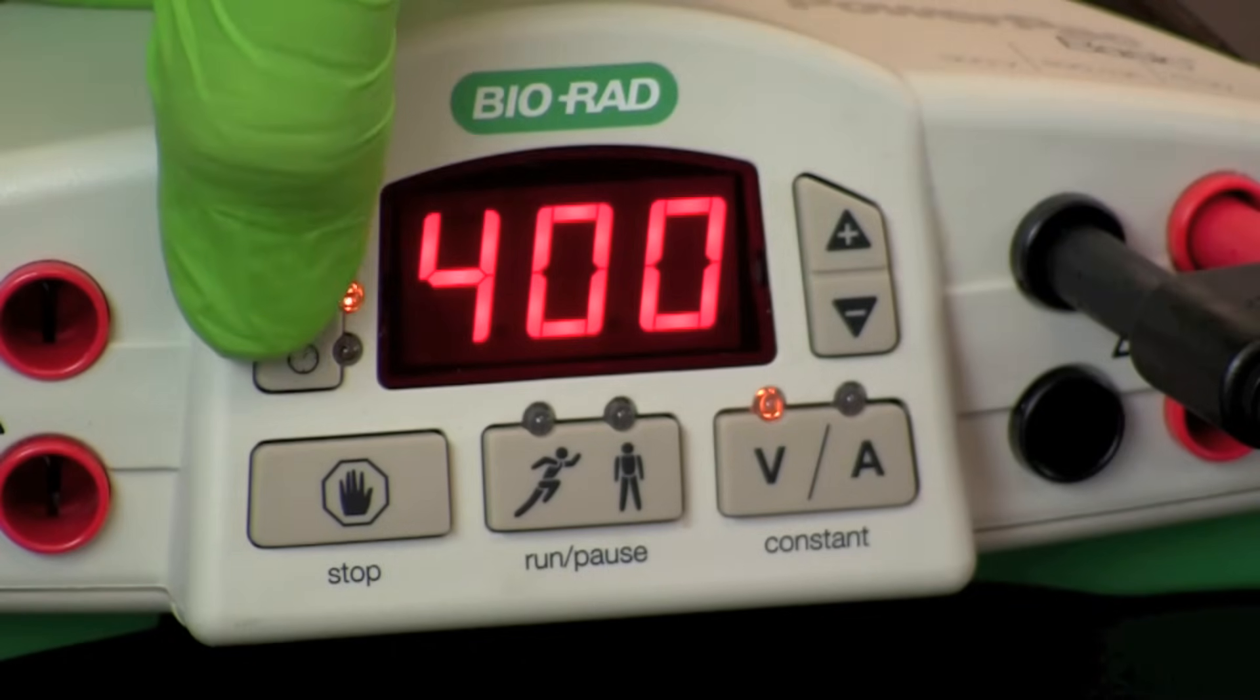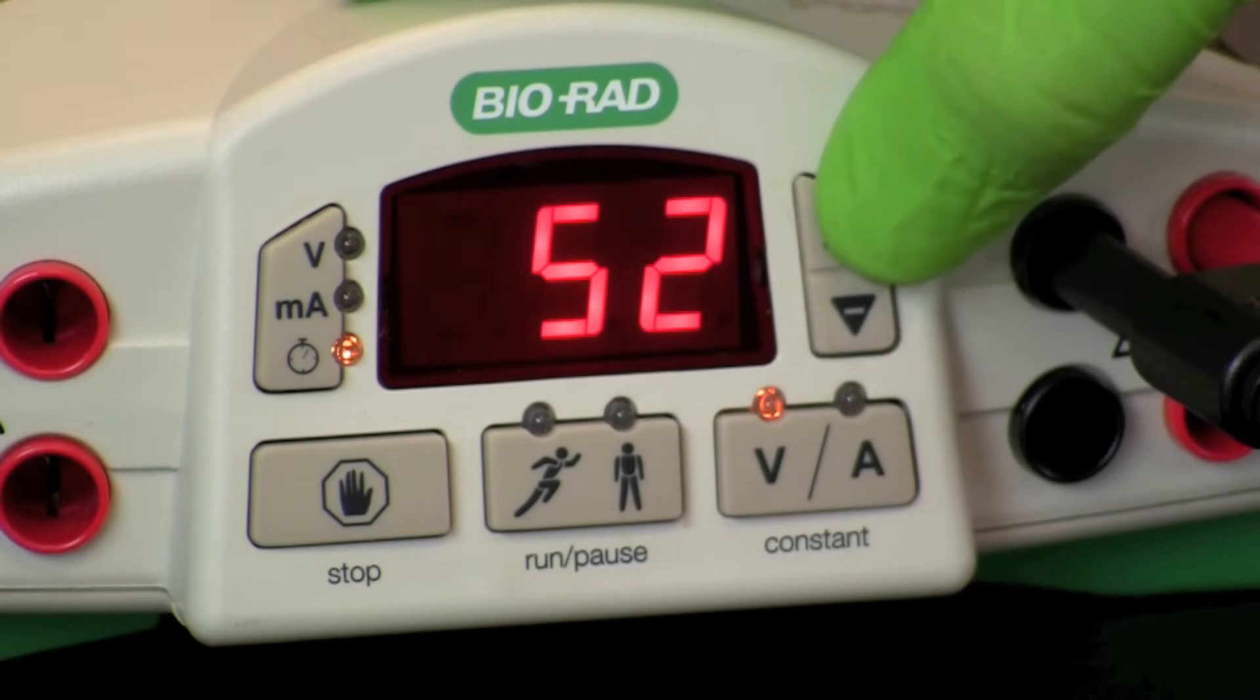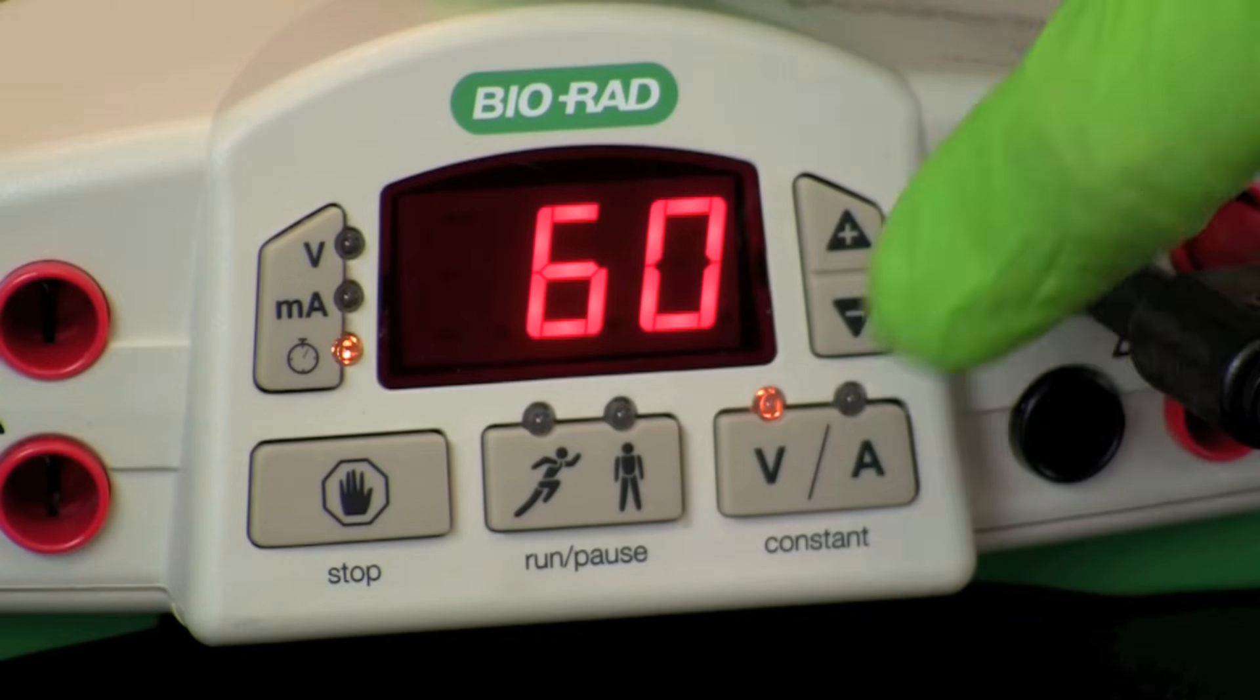If a timer is available on your power supply, set the clock for the proper time for your run. Press the start button to begin the flow of current that will separate the DNA fragments.